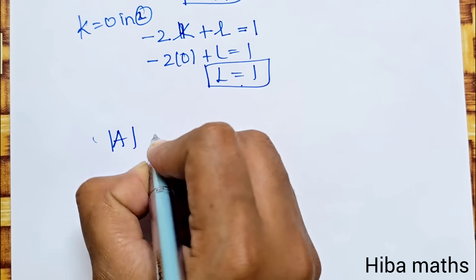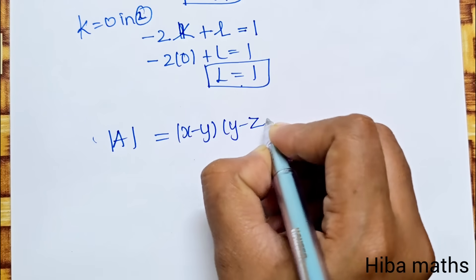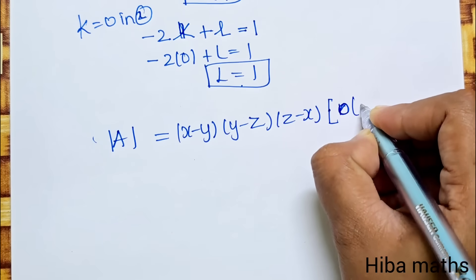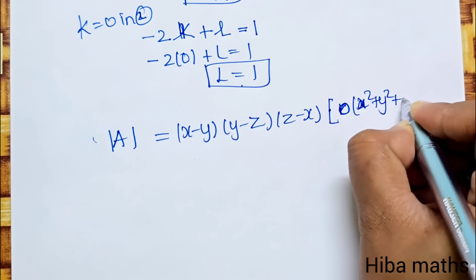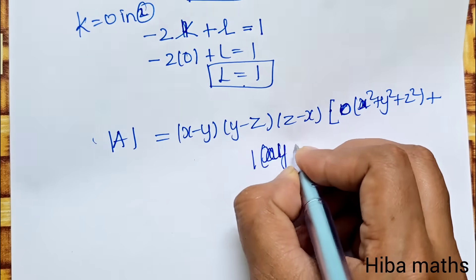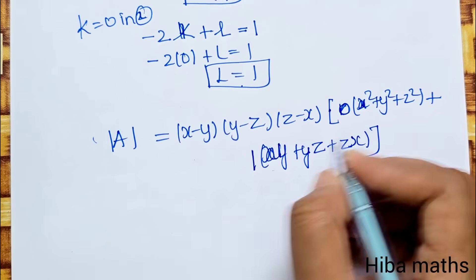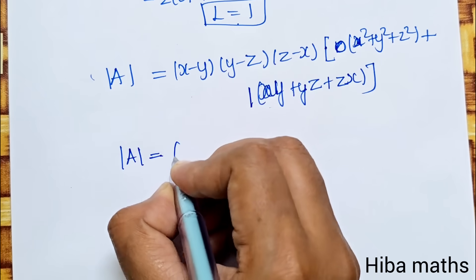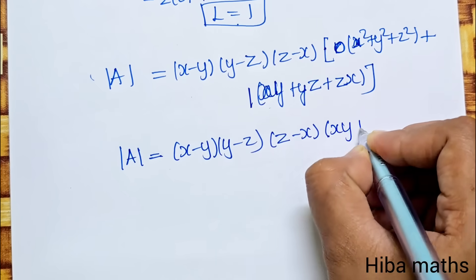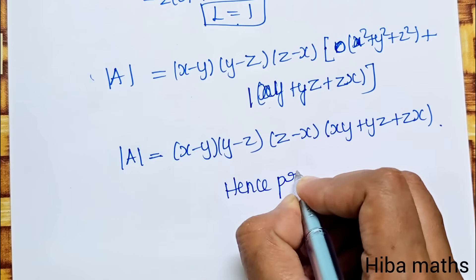Substituting k=0 and l=1 back: modulus of A equals (x-y)(y-z)(z-x) into 0×(x²+y²+z²) + 1×(xy+yz+zx). Since 1 into anything is the same, modulus of A = (x-y)(y-z)(z-x)(xy+yz+zx). Hence proved.